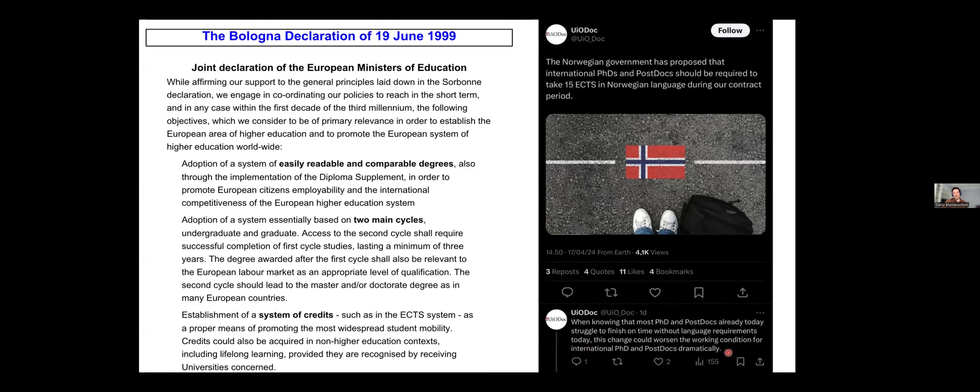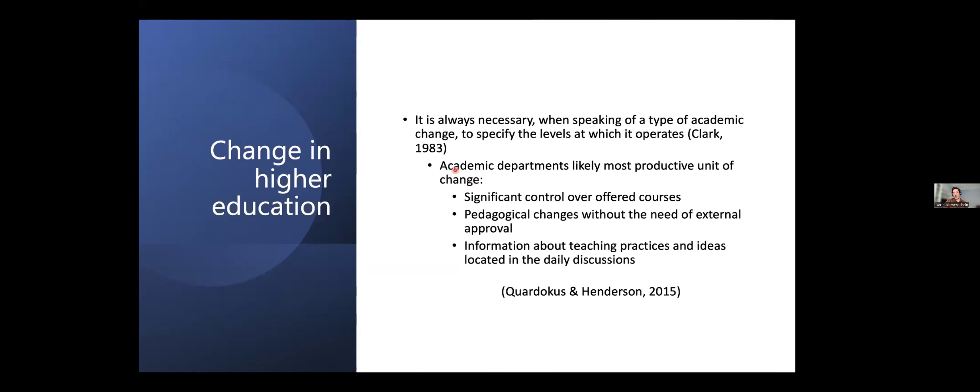One important thing to note here is that all these, in this case three changes that I've shown, they are what we call top-down changes. So we don't really have a lot of influence over them. I mean, this one was in 1999. So I was only five years old. So I definitely didn't have any influence over that. I barely had influence over my own life. But the point is that it's top-down changes that we are not really too concerned with in the research that we do. What we are more concerned with is something else. We are more interested in academic departments.